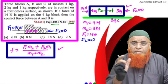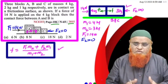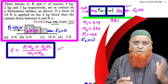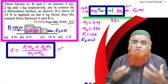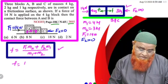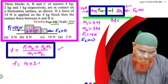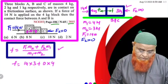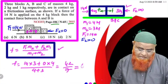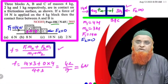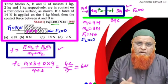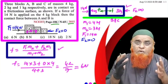The shortcut formula is: contact force = (F1·m2 + F2·m1) / (m1 + m2). Here F1 = 14 N, F2 = 0, m1 = 4 kg, m2 = 3 kg. So contact force = (14 × 3 + 0 × 4) / (4 + 3) = 42/7 = 6 newtons. This one-step formula lets you solve it without pen and paper if you're comfortable with the math.